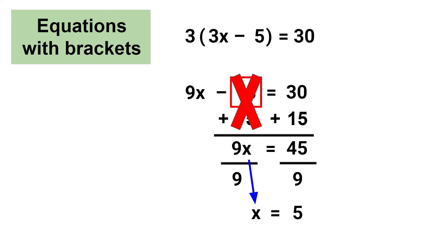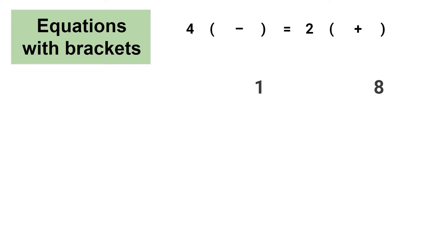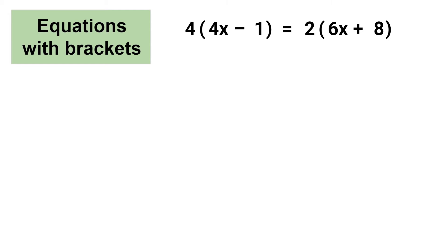So x is equal to 5. Let's try one more. In this example we have an equation with variables and brackets on both sides. I've created a video that focuses specifically on equations with variables on both sides, so you're welcome to watch that video first if you'd like — you can find the link in the description below. Just like the previous example, the first step is to expand the brackets.